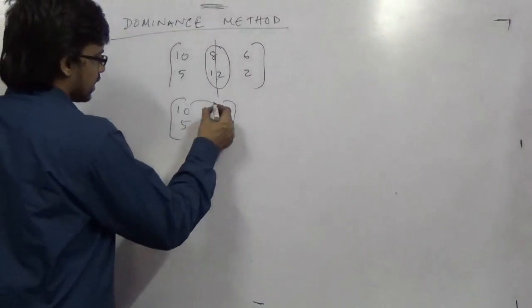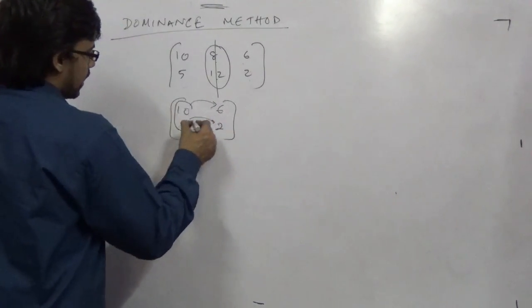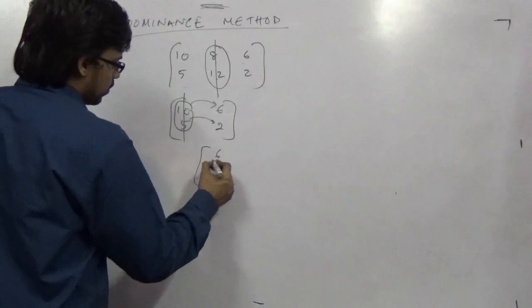Now again we have two columns: 10 greater than 6, 5 greater than 2. Again the bigger is gone, then the smaller prevails: 6, 2.